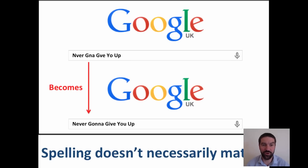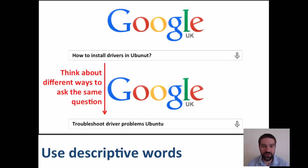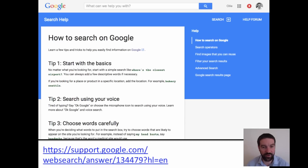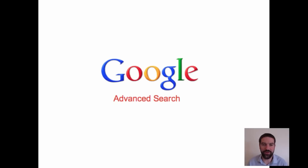Use descriptive words as much as possible, or think about different ways to ask the same question if you're not happy with the results. Google itself has a really good resource on how to use the search engine. If you just Google 'how to search on Google' you'll get the results straight away. Google also has an advanced search function which we're going to look at in more detail in the next video.